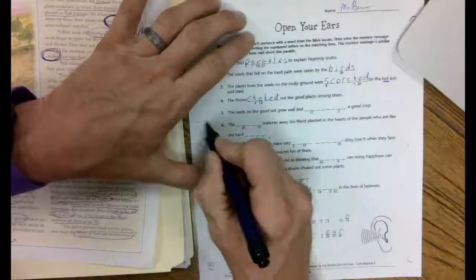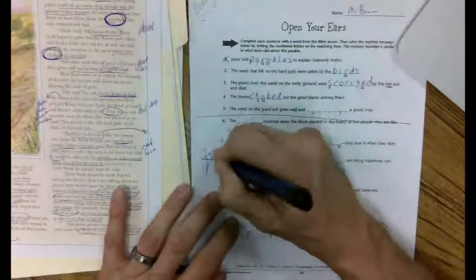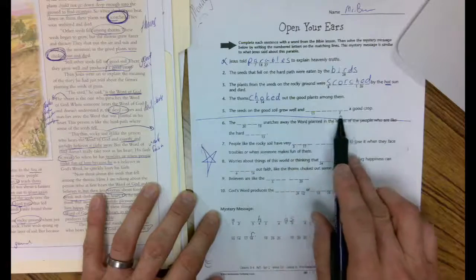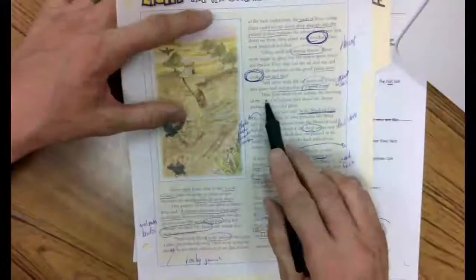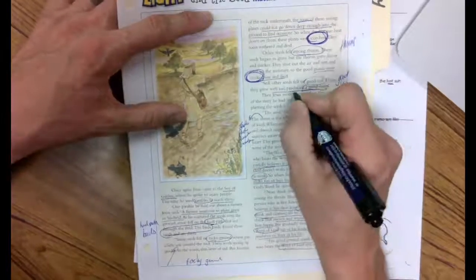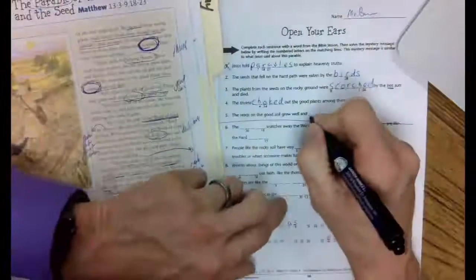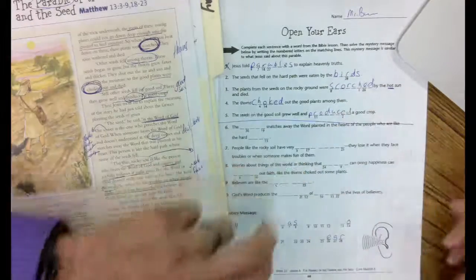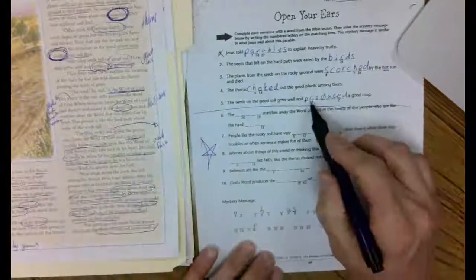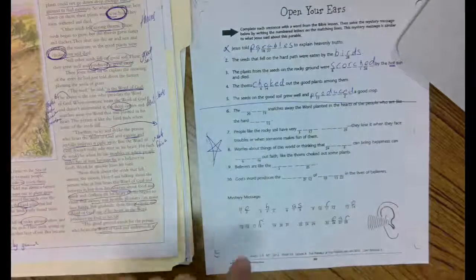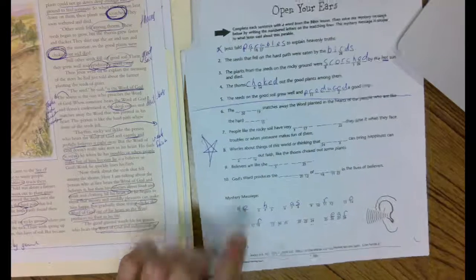Number five. I'm going to do one more. We'll have done half of them for you and then the rest are going to be on your own. Number five. The seeds on the ground, on the good soil, grew well and blanked a good crop. I think it's produced, but I'm going to go ahead and read it anyhow. Then Jesus went on. Still other seeds fell on good soil. There they grew well and produced. There it is. P-R-O-D-U-C-E-D, produced. Number 11 is an R, and number two is an E. He, we've got one word already.